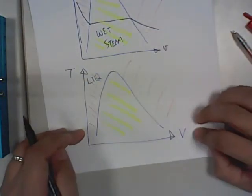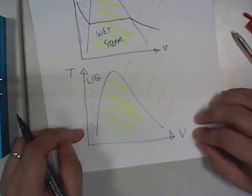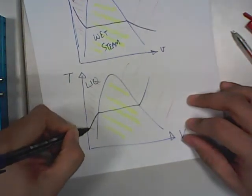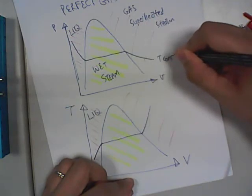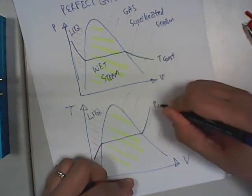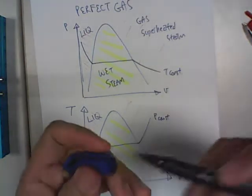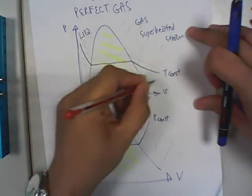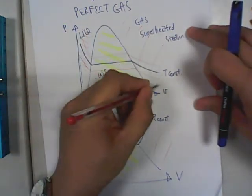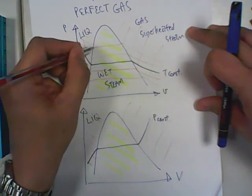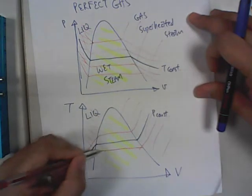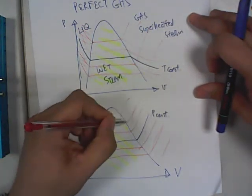For the T-V curve, your constant pressure line goes in the directly opposite direction — it's going up. So in the PV diagram we have T constant lines, and in the TV diagram we have P constant lines. There are infinitely many constant temperature lines covering the entire PV area, and infinitely many constant pressure lines covering the entire TV area.